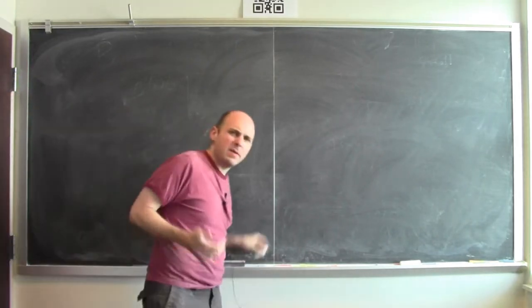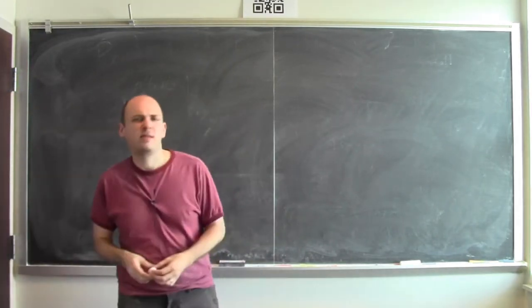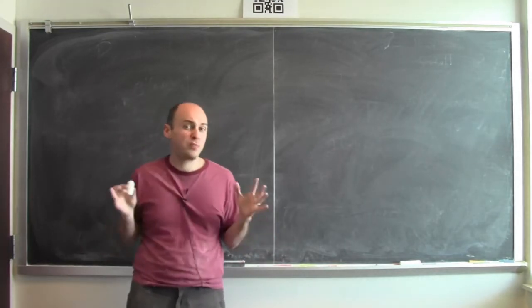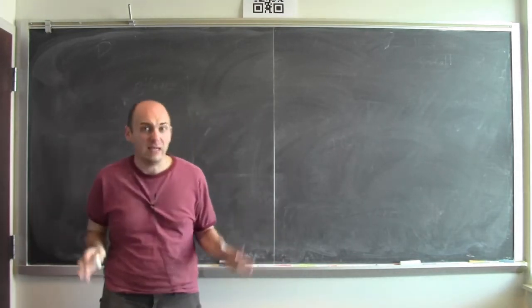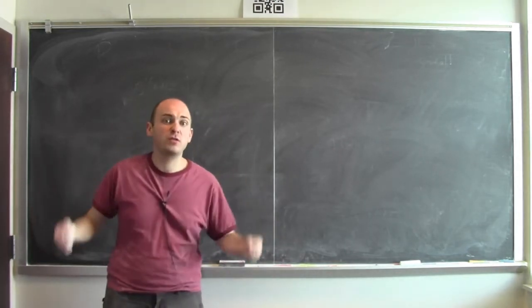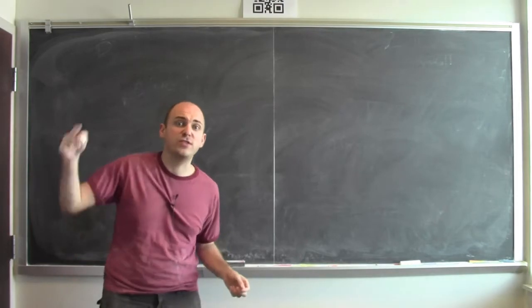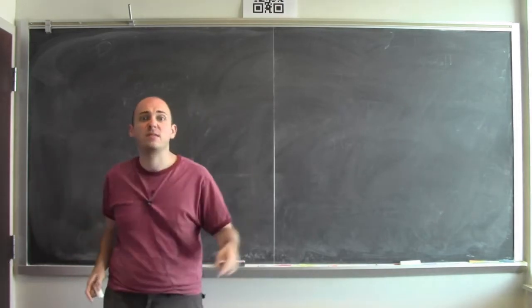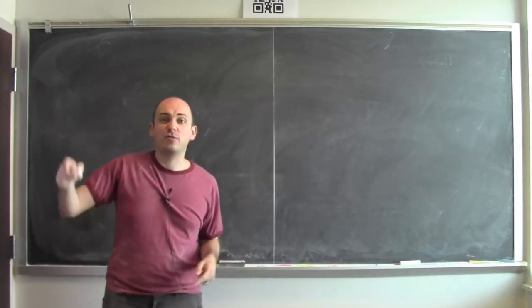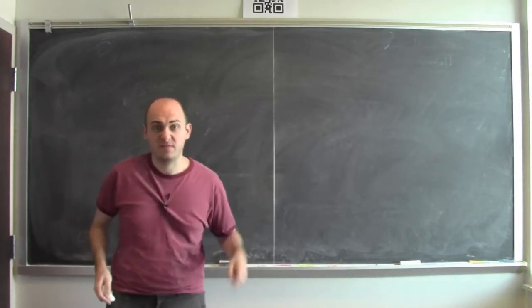I'm going to do some algebraic calculations to convince you that the product rule is what it is. The derivative of a product of two functions is the derivative of the first times the second, plus the first times the derivative of the second.